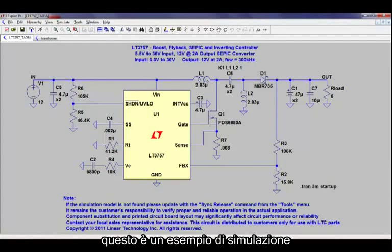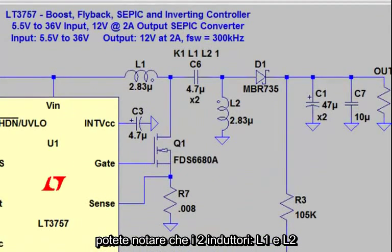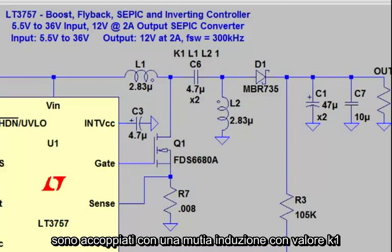Here's an example simulation file using the LT3757 in a SEPIC topology. And you'll notice that the two inductors, L1 and L2, are coupled using a mutual inductance statement, K1.